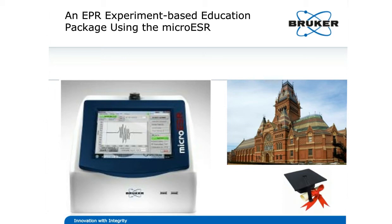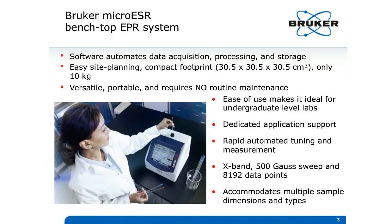To foster growth and help in the education about EPR, we've developed an education package for our micro-SR instrument with everything that you'll need to get started. The education package is ideal for undergraduate laboratories. At the center of this education package is the micro-SR itself. The micro-SR is both versatile and portable — about a cubic foot in volume and approximately 22 pounds or 10 kilograms. It requires no routine maintenance, so no cryogens are necessary, and it's easy to use, which makes it ideal for undergraduate labs.